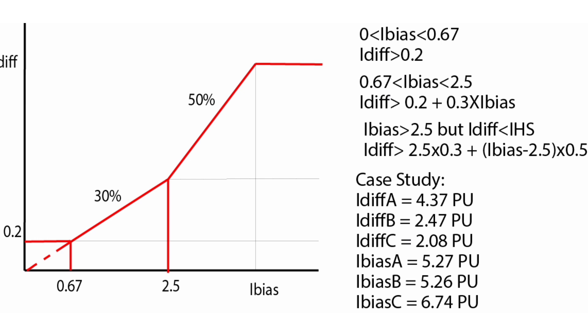Here the differential current for phase A, phase B, and phase C are 4.37 per unit, 2.47 per unit, and 2.08 per unit respectively. And bias current for phase A, phase B, and phase C are respectively 5.27 per unit, 5.26 per unit, and 6.74 per unit.